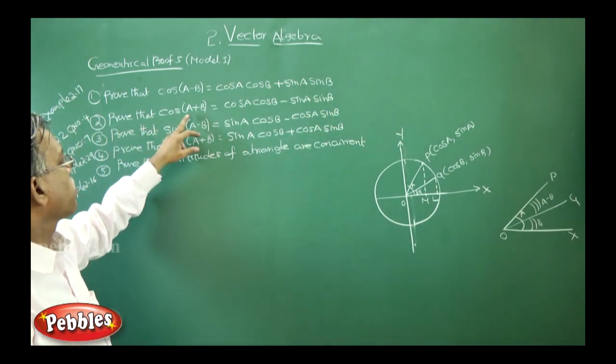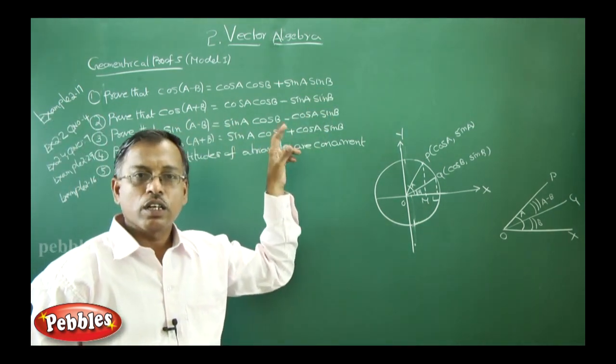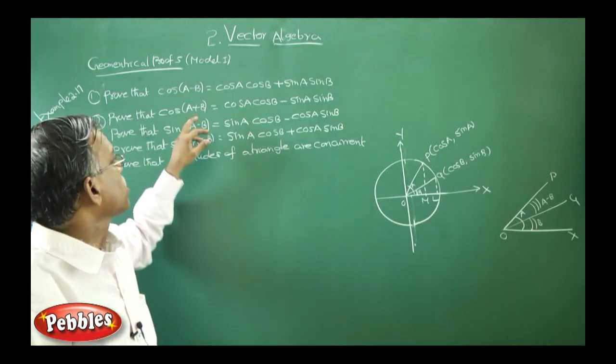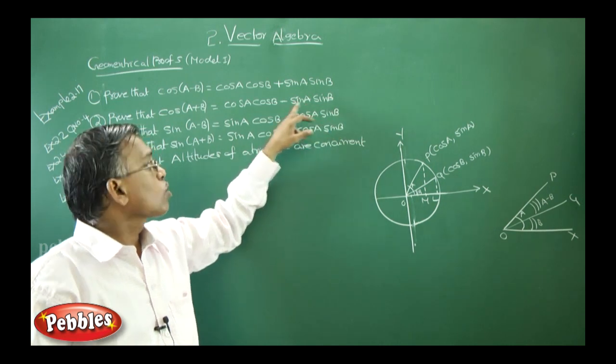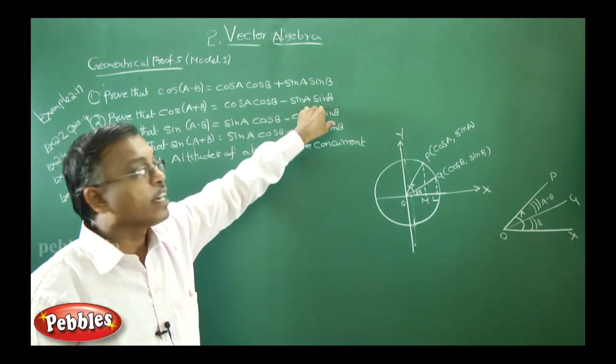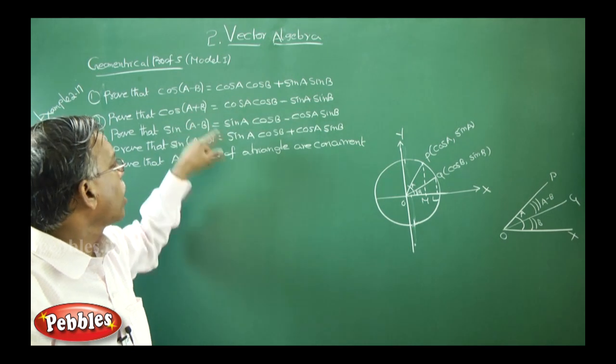Next, prove that cos of A plus B equals cos A cos B. What is opposite sign if it is plus? Minus sin A minus sin B. So, two cos terms, two sin terms. In the middle you will get the opposite sign.